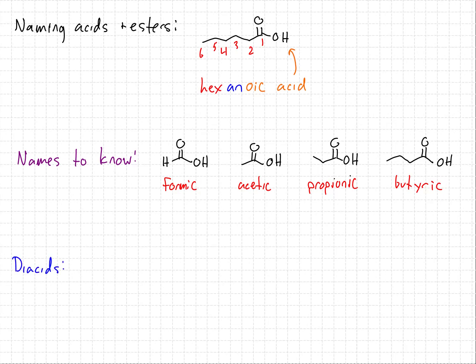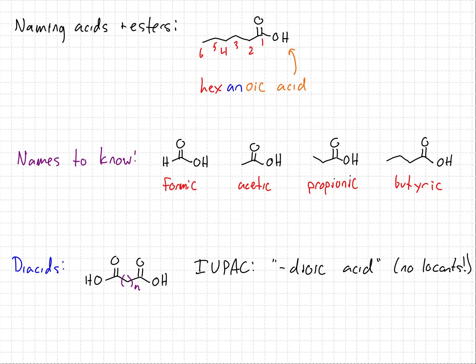If there are multiple carboxylic acids in the same molecule, we can use the same process used for naming aldehydes. We're most interested in dicarboxylic acids, where we have some number of alkyl groups separating two carboxylic acids. The IUPAC suffix for this would be 'dioic acid.' Note that, like with aldehydes, there are no locants here because it is implied that the carboxylic acid is at the end of the chain.